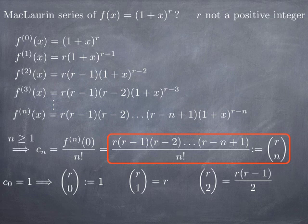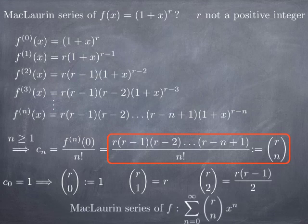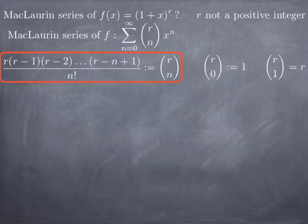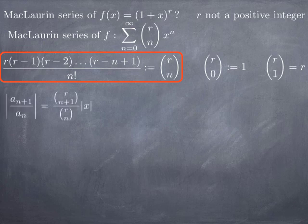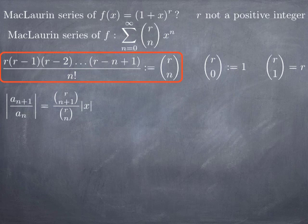With these notations, the Maclaurin series for f(x) = (1+x)^r is the power series from n = 0 to infinity of C(r, n) times x^n. To find the radius of convergence, we use the ratio test. Setting a_n equal to C(r, n) times x^n, we look at the absolute value of the ratio of consecutive terms: |a_{n+1}/a_n| = |C(r, n+1)/C(r, n)| times |x|.